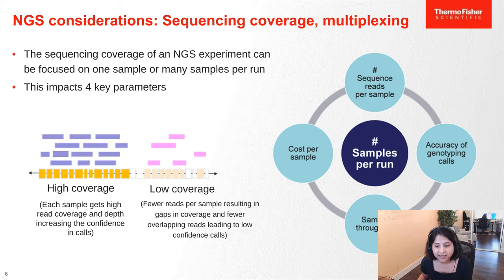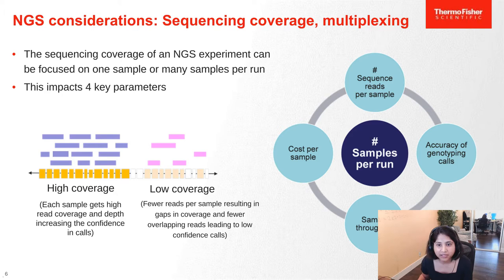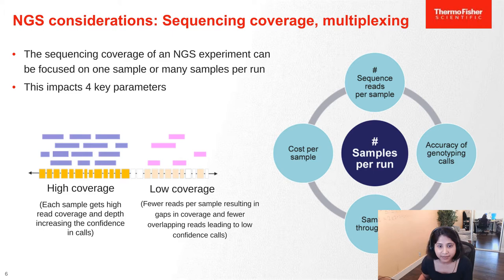The four factors are: cost per sample, sequencing reads per sample, accuracy of calls based on the research goal, and sample throughput. Whole genome sequencing is typically done at a very high coverage of 20–30x, meaning every locus in a genome has on average 20 reads, allowing reliable calls. The level of coverage can be adjusted by multiplexing samples — if more samples are multiplexed together, each sample receives fewer sequence reads, impacting genotyping accuracy. Low coverage sequencing reads have fewer overlapping reads and gaps where no reads are present.